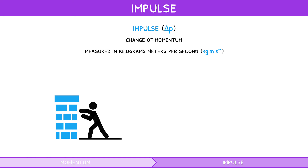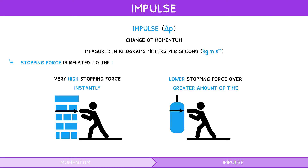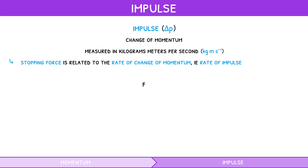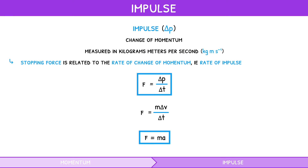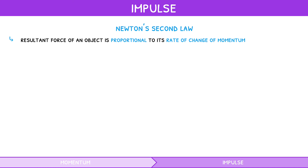Imagine a boxer punching a wall and then a punching bag. The wall stops the punch by providing a very high stopping force instantly, whereas the punching bag stops the same punch by providing a lower stopping force over a greater amount of time. So the magnitude of the stopping force is related to the rate of change in momentum, or the rate of impulse. Mathematically: force equals impulse divided by change in time, which simplifies to force equals mass times change in velocity divided by change in time, and then force equals mass times acceleration.